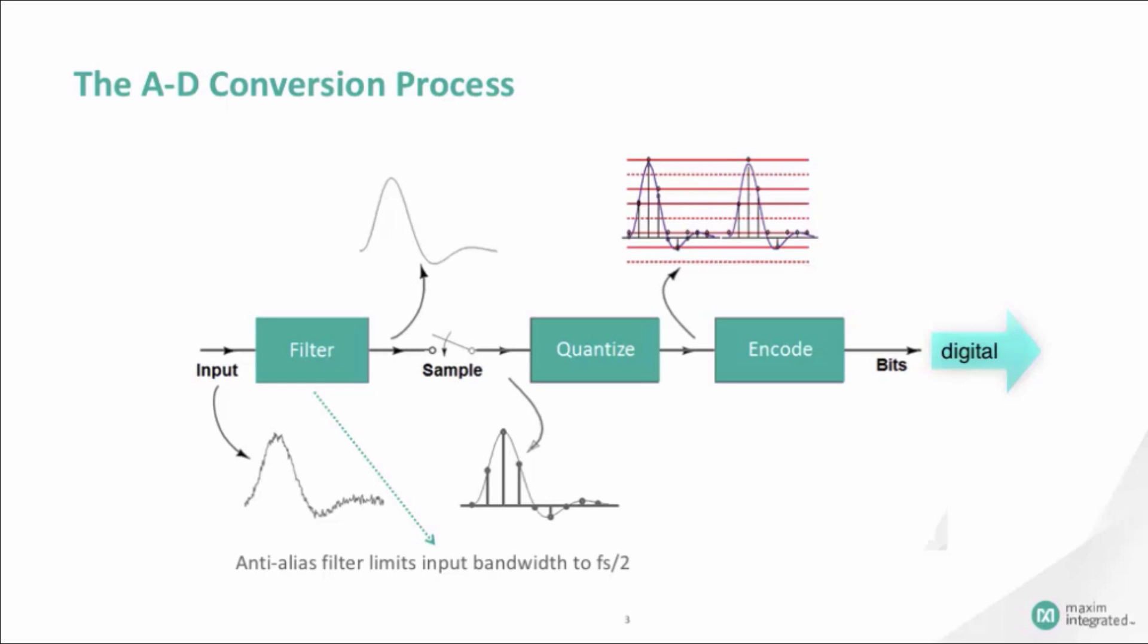To avoid a phenomenon called aliasing, which is an effect that can cause the signal to become distorted when sampled, the signal has to go through a filter to limit its bandwidth to half of the sampling frequency. This filter is called an anti-aliasing filter.